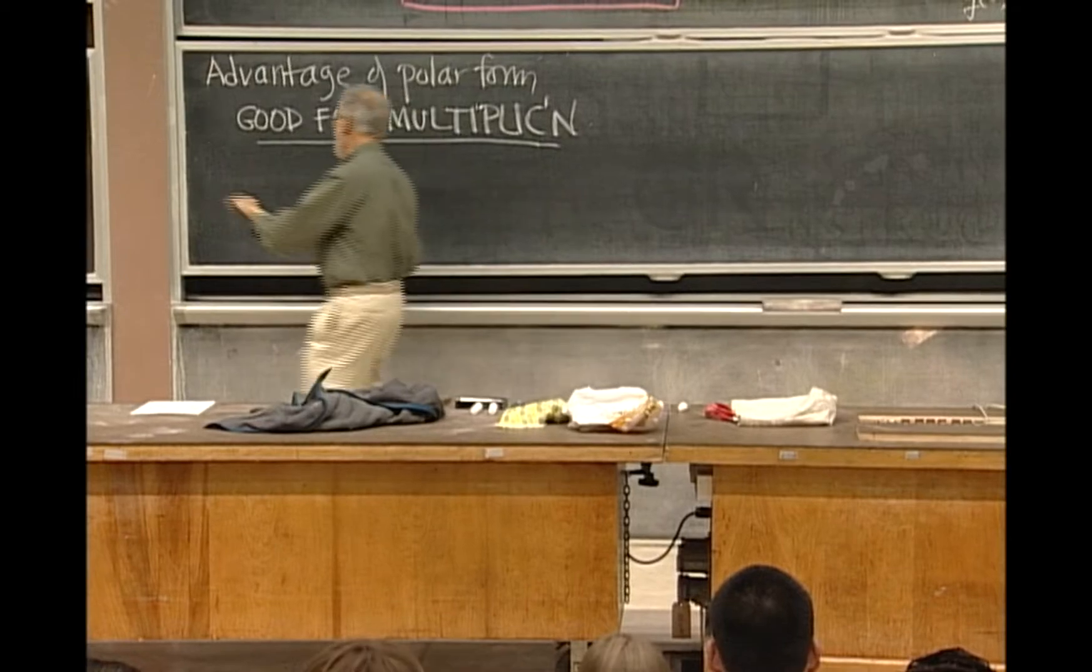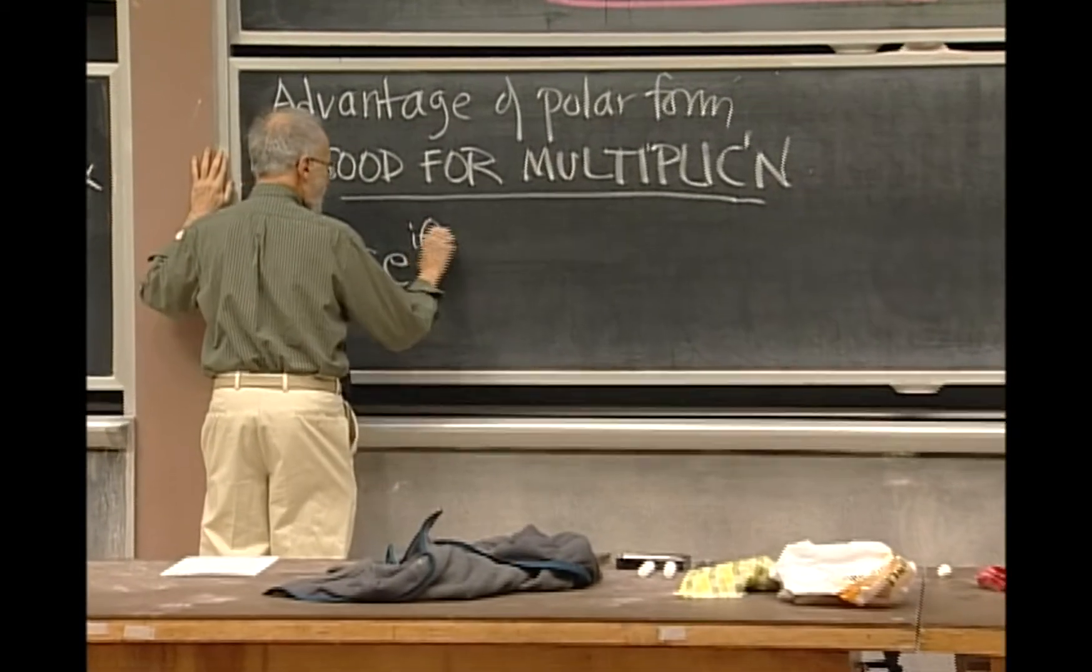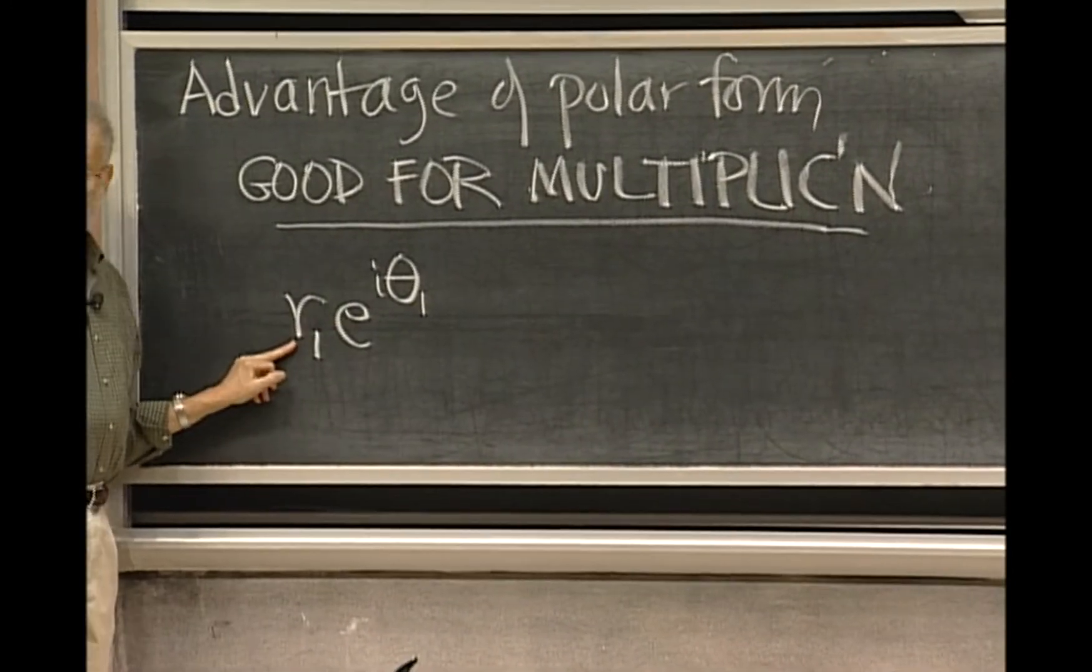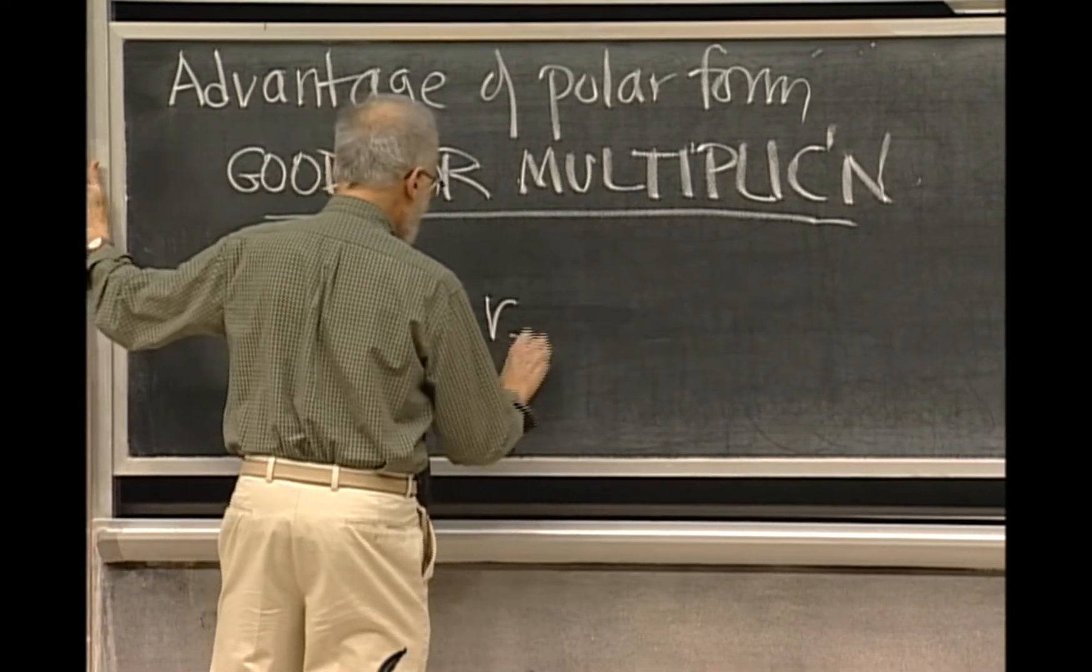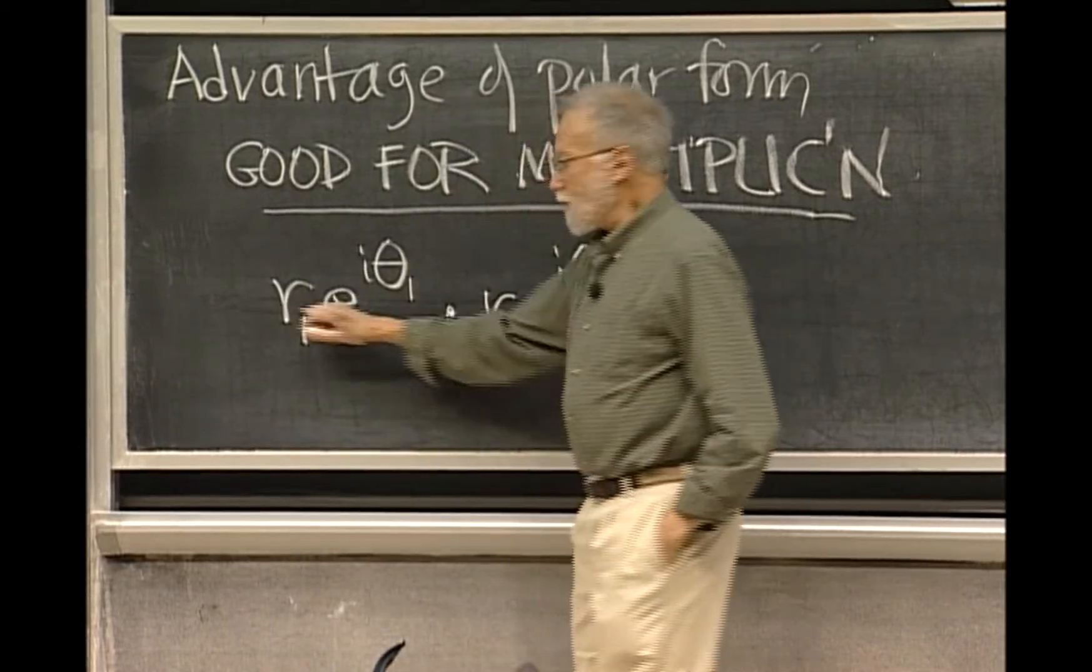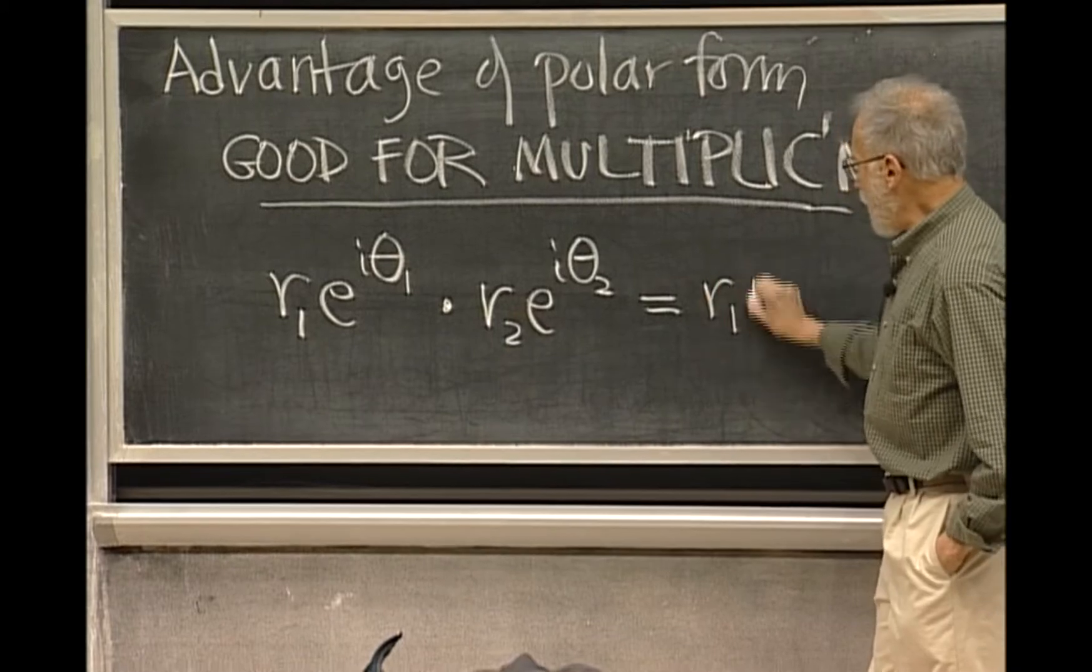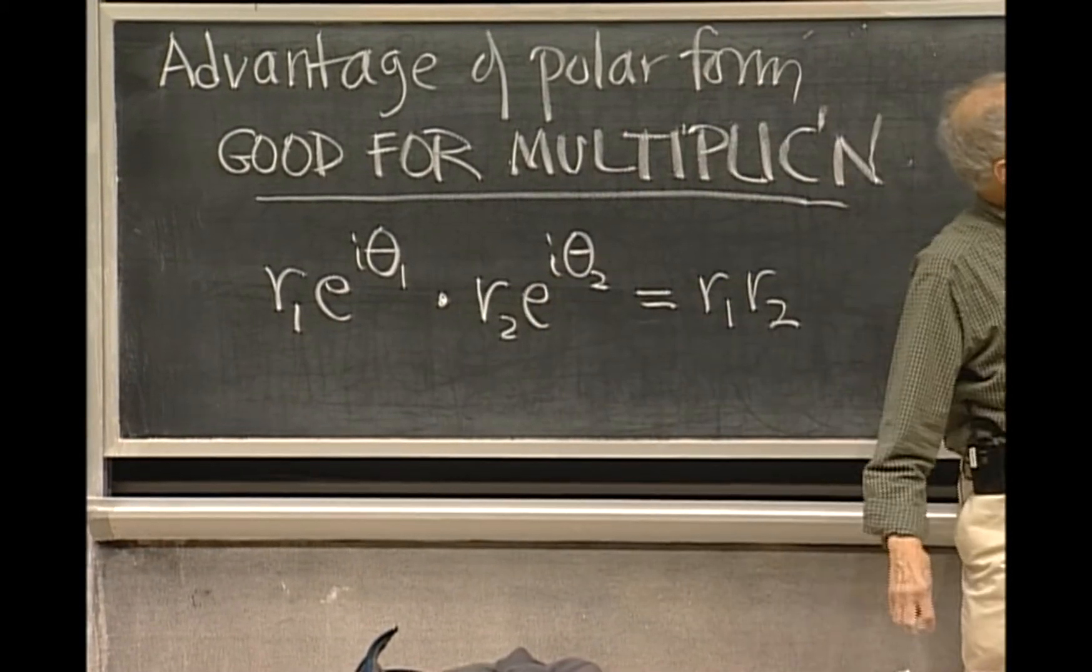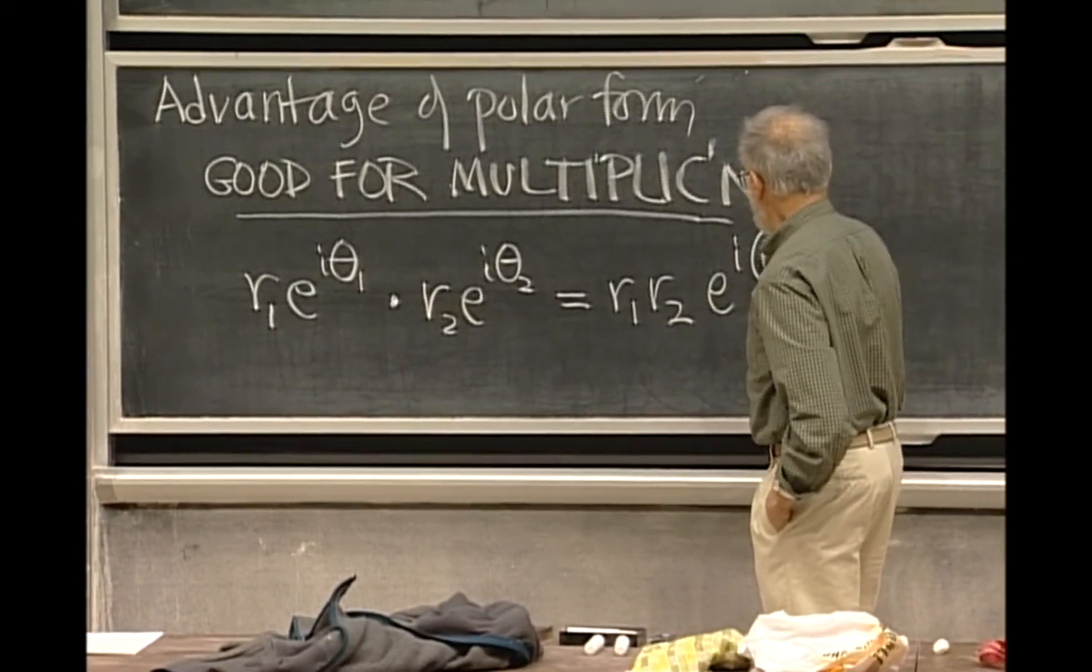It's good for multiplication because the product, so here's any number in its polar form, that's a general complex number. It's modulus times the e to the i theta, times r₂ e to the i theta 2. Well you just multiply them as ordinary numbers, so the part out front will be r₁r₂, and the e to the i theta parts gets multiplied by the exponential law and becomes e to the i theta 1 plus theta 2.